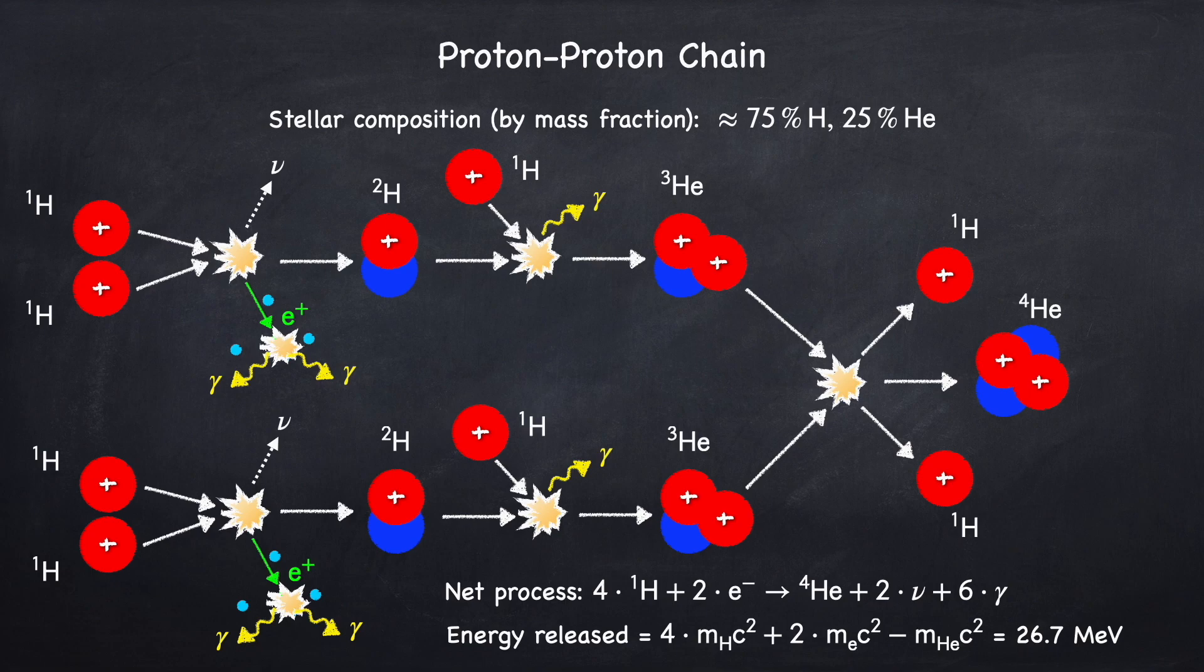Stars during their main sequence phase, which is most of their life, are made up of roughly 75% hydrogen and 25% helium. They are supported against gravitational collapse by fusion taking place in their cores. And during the main sequence phase, that's hydrogen fusion.